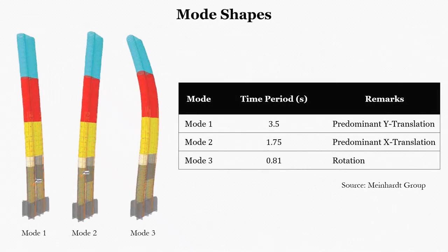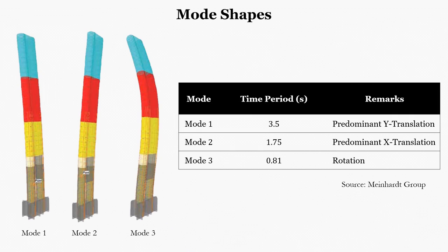Now let's see the dynamic properties of the structure through modal analysis. The primary lateral load-resisting system is two composite concrete cores — whichever way the cores move, so will the rest of the statue. The mode shapes and dynamic periods roughly relate to those of buildings of similar height. The first two mode shapes are predominantly in translation with some degree of coupled secondary rotation, while the third mode is in torsion. The secondary rotations in the first two modes are manifestations of the irregular nature of the structure.